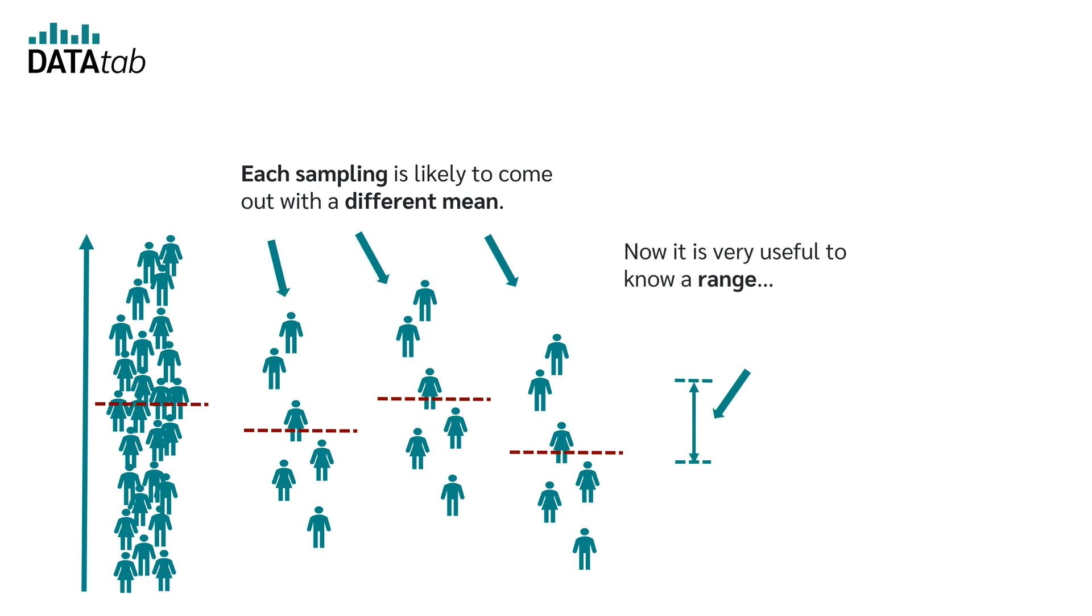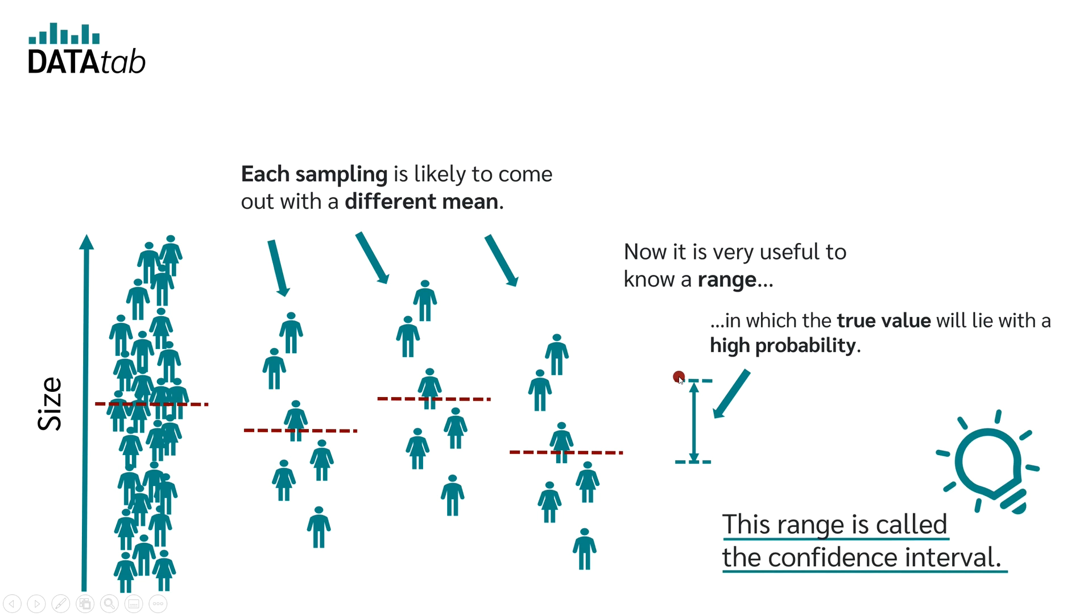Now it is very useful to know a range in which the true value will lie with a certain probability. Here we have the means of our sample, but actually we want to know where the mean of the population is. Therefore, we want to find out in which range the true mean value is most likely to be found. This range is called the confidence interval.